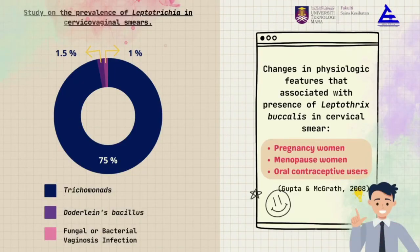As you can see from the graph, Leptothrix species mostly presents in Trichomoniasis, followed by Döderlein bacillus, and then fungal or bacterial infection. This is caused by the change in physiological features in the patient's body.